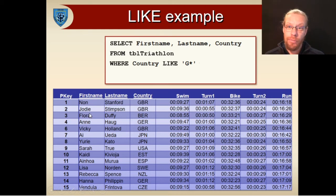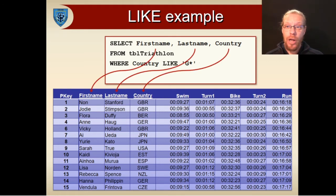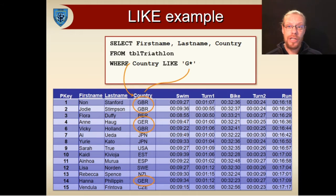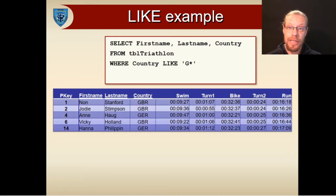Let's have a look at this example using the triathlon table, which we used in the introduction to SQL video. In this statement, we're requesting first name, last name, and country from all the countries whose code starts with the letter G. The asterisk wildcard, the star, matches any number of any other characters after the G. In this example, that means that both GBR and GER will match.